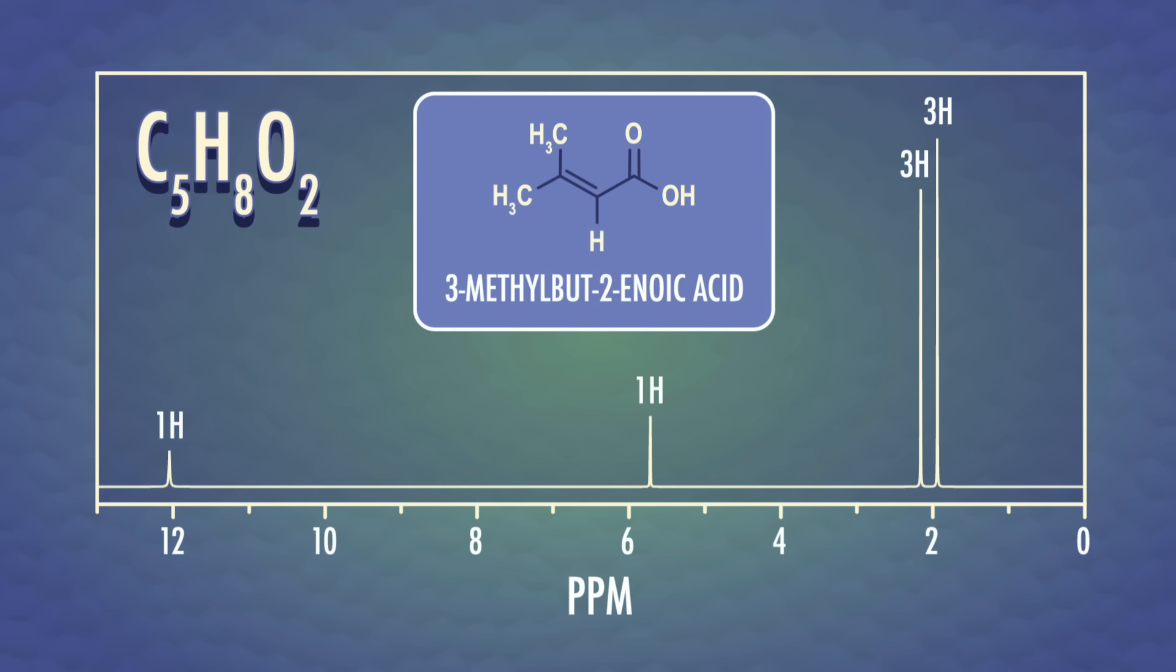Even though the two methyl groups are attached to the same carbon, double bonds are rigid. So one of these groups is stuck on the same side as the carboxylic acid, and one is on the same side as the hydrogen. These methyl hydrogens are in different chemical environments, and they're not chemically equivalent, so that's why they show up as two different peaks. We'll talk more about chemical equivalents in a later episode when we look at the proton NMR spectra of aromatic compounds.